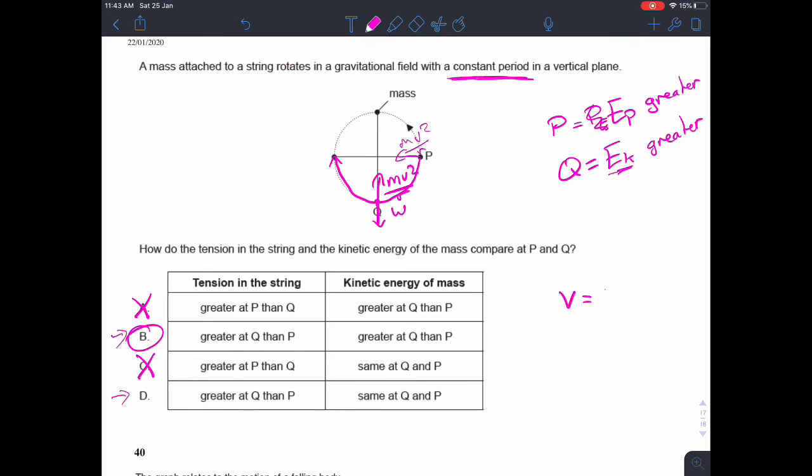If you remember that V equals omega R and that omega equals two pi over T, then what that means is that if the period is constant, then the velocity must be constant as well because the radius is staying the same because it's moving in a circle. So if the velocity is constant and the mass is constant, then the kinetic energy should be the same. So that would indicate that the answer is D.